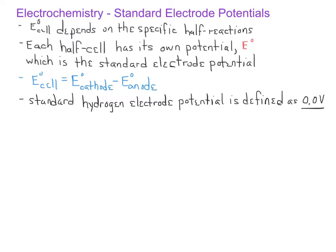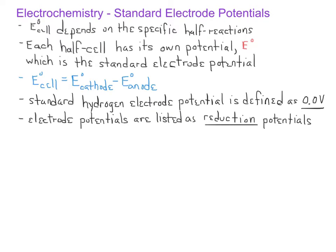Other half-cells or half-reactions will have a more positive or more negative potential relative to the standard hydrogen potential, as shown in Table 18.1. When we look at Table 18.1, we notice that all the half-reactions listed are reduction half-reactions. The electrode in any half-cell with a greater tendency to undergo reduction is positively charged relative to the standard hydrogen electrode and therefore has a positive standard electrode potential.